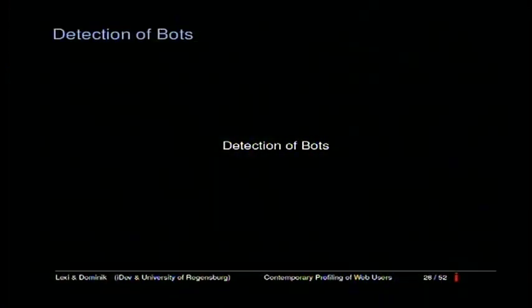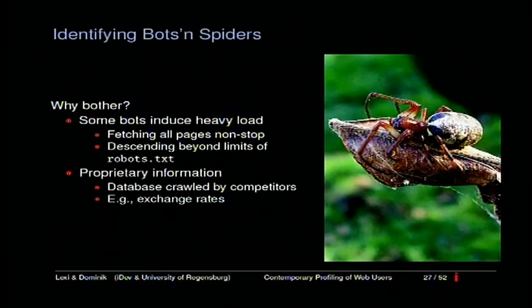The next chapter is about detection of bots, or in general strange users of a web page. When you run a large corporate web page, bots can be a real pain - they fetch all pages non-stop, sometimes every two seconds, inducing heavy load. They also ignore robots.txt and can crawl proprietary information you don't want competitors to access. So you don't want these bots on your web page.